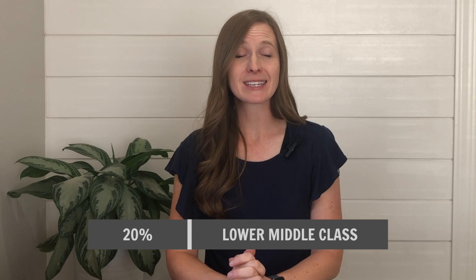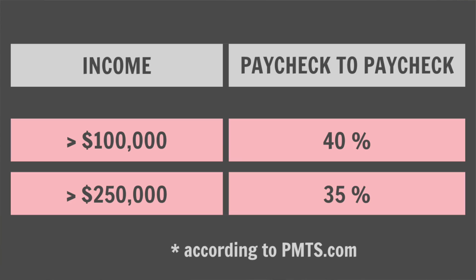The next 20% of Americans is the lower middle class. They have a median net worth of $43,760. Now most people assume that net worth is directly related to income — if you make a lot of money, you must be worth a lot of money. But that is not true. From a study that was done, of those making $100,000 or more a year, 40% of them live paycheck to paycheck. Of those making $250,000 or more a year, 36% are living paycheck to paycheck. Just because you make a lot does not mean your net worth will be high — I have a prime example of this at the end.